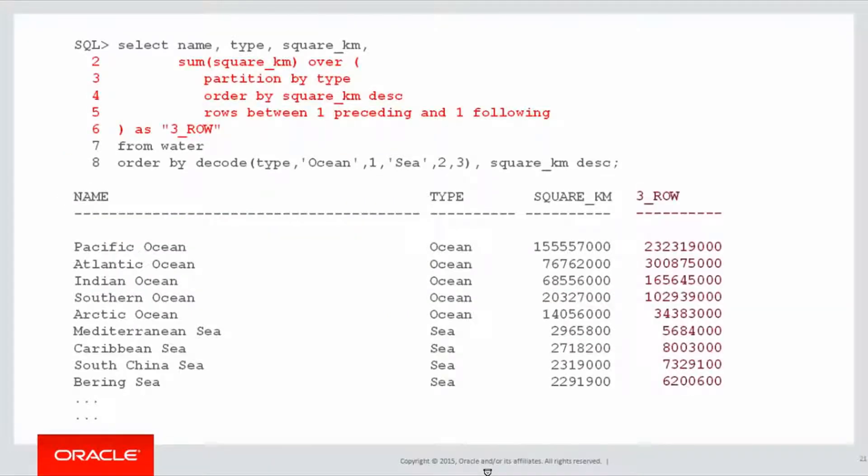Let's see how it's built up. The first row, Pacific Ocean, well when we go to look one row preceding, there obviously is no row preceding the Pacific Ocean. It's the largest from the square kilometres, and we're ordering by square kilometres descending. So there's nothing before.